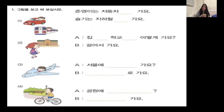그림을 보고 써 보십시오. Let's read before we fill in the blank. 'Junyeong이는 자동차 [blank] 가요.' We see the form of transportation and the sentence ends in 가요, so after the transportation we add 로. 자동차로 가요 — Junyeong goes by car.